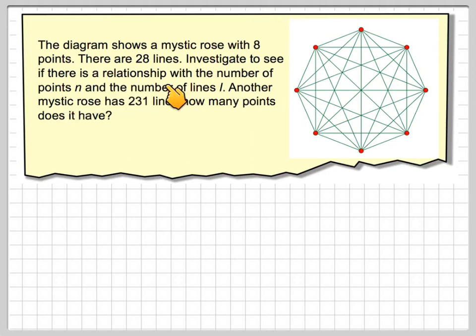Investigate to see if there's a relationship with the number of points N and the number of lines L. So when N is 8, L is 28, that's what we're saying. Another mystic rose has 231 lines. How many points does it have?